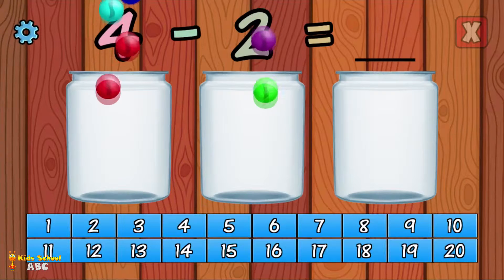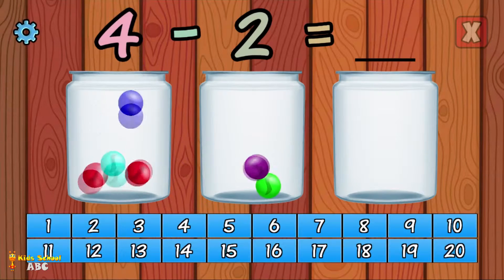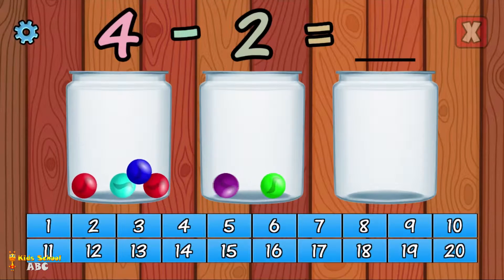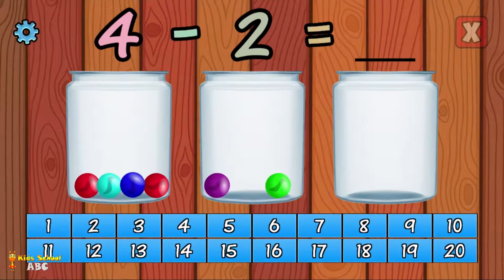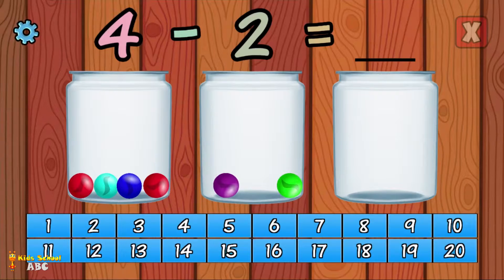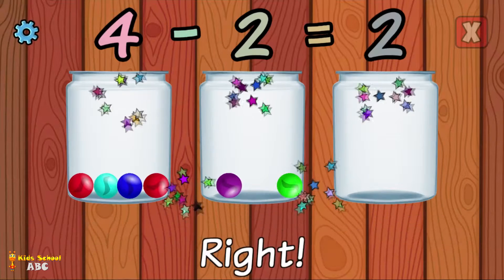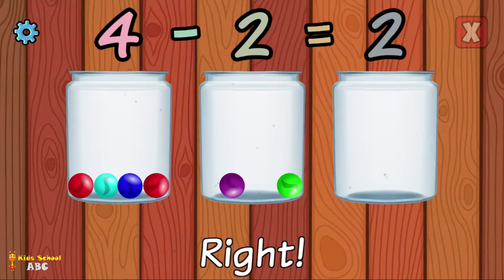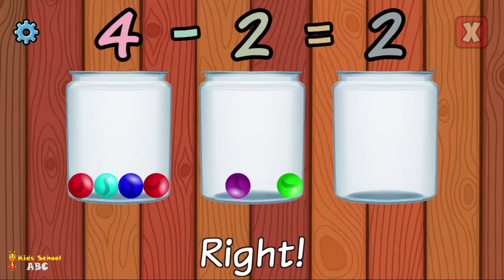What is 4 minus 2? Right! 4 minus 2 equals 2.